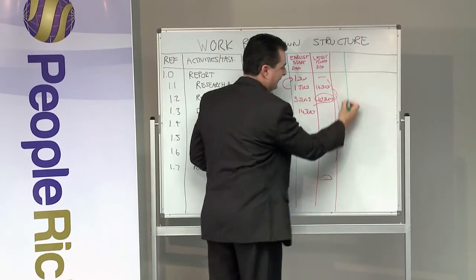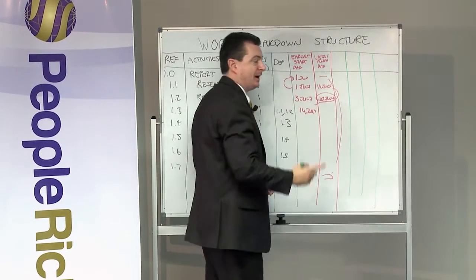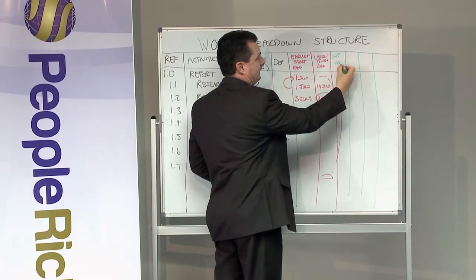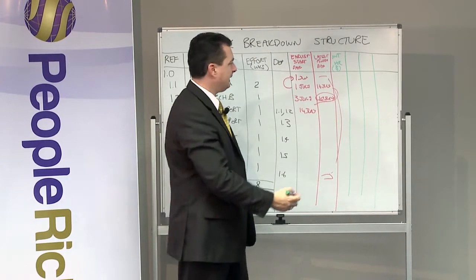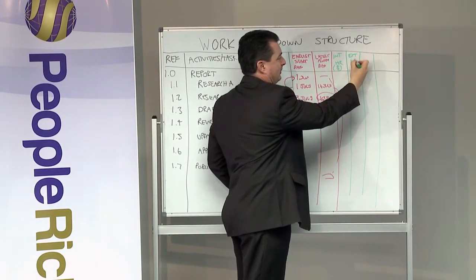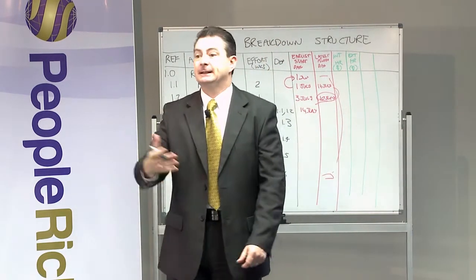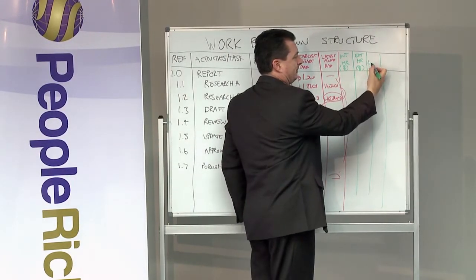If I costed three things I would be able to really understand cost. The first one is Internal HR - the dollars for my internal resources. If I then worked out the dollars for my External HR, what's external HR? Yeah, outsourcing, consultants, contractors, etc.